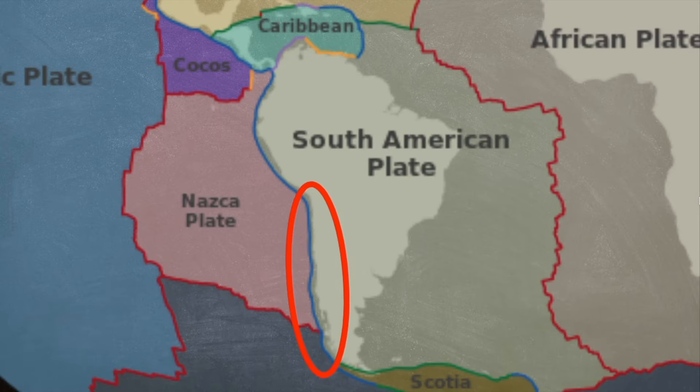The strength, or magnitude, of an earthquake is recorded using the Richter scale. The strongest earthquake ever recorded scored a 9.5 on the Richter scale, in Chile in 1960.